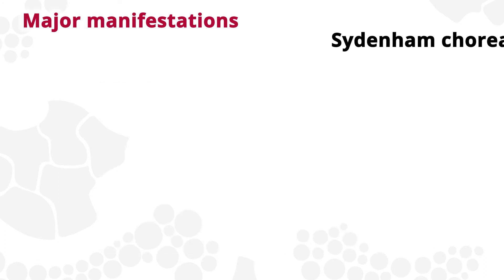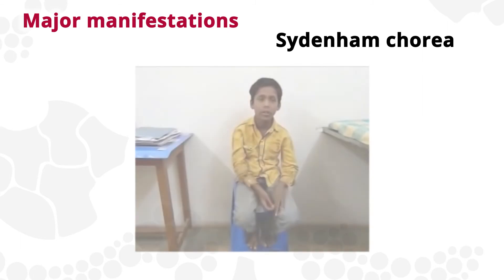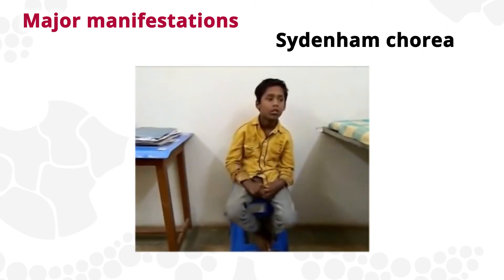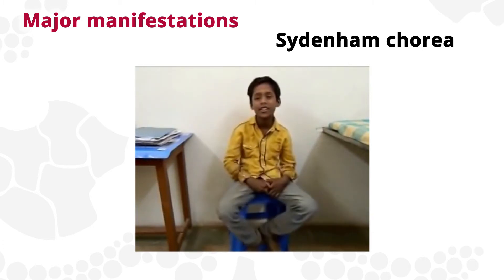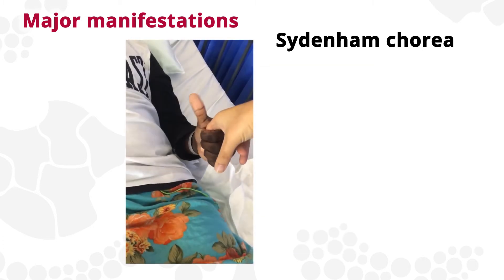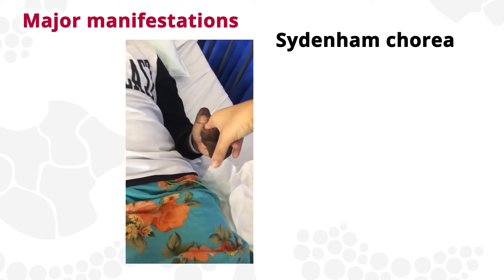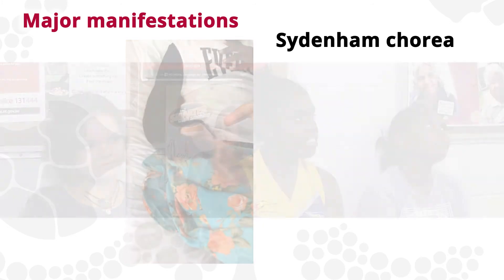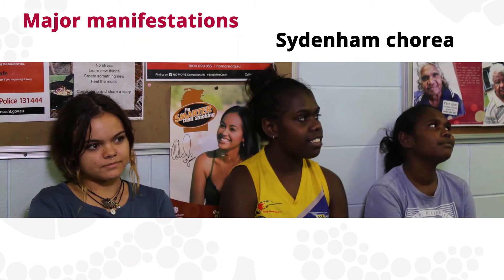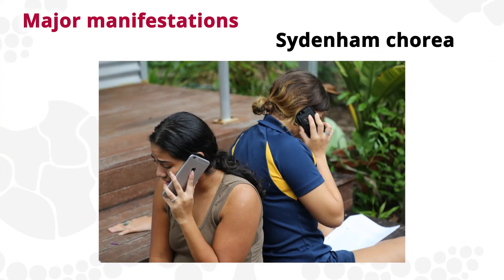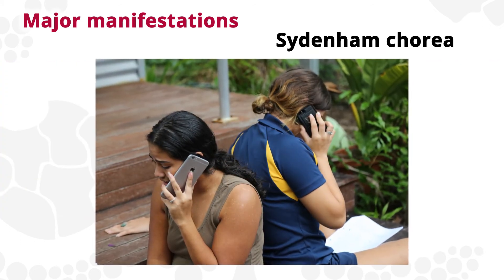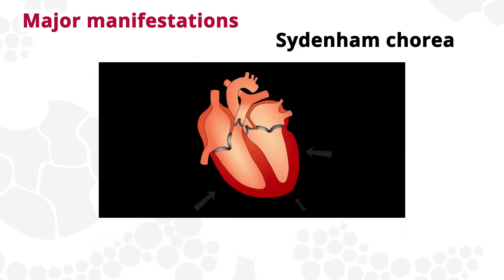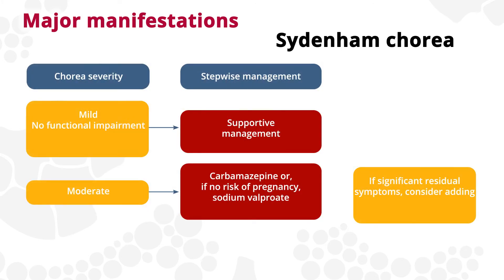The next most common major manifestation is Sydenham chorea. This can occur months after the initial Strep A infection, therefore it can be used alone to diagnose ARF. It appears as jerky, uncoordinated movements, especially affecting the hands, feet, tongue and face. Sydenham chorea is more common in adolescent girls and can be very distressing. It can affect one or both sides of the body and disappears during sleep. It usually resolves within six months and is strongly associated with carditis. Generally, no treatment is required, but if it is interfering with daily activities or resulting in self-harm, anti-convulsant medication can be effective.